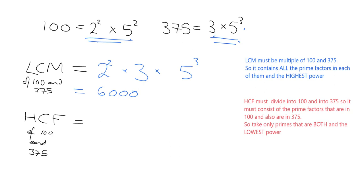What about the highest common factor? It has to divide into both 100 and 375, so we can only take the primes that appear in both. Two is not in both, so I can't take that. Five is in both, so I can take it. Three is not in both, so I can't take it. Then, having found the shared primes, I must take the lowest power. Five squared versus 5 cubed — I take 5². So the highest common factor is 25.